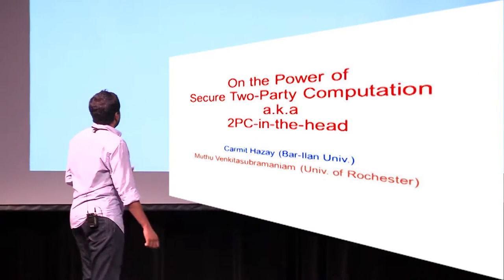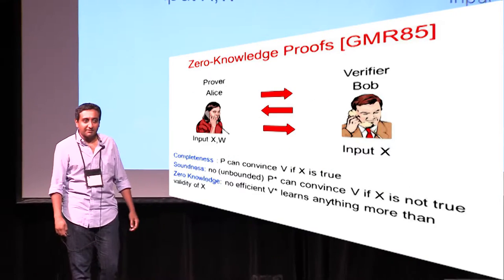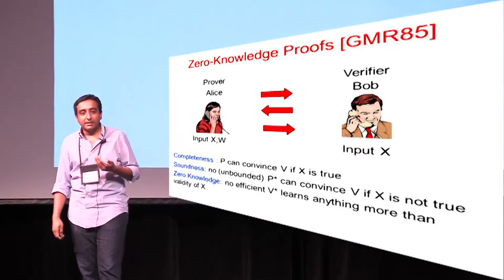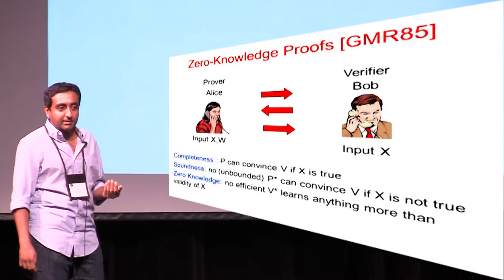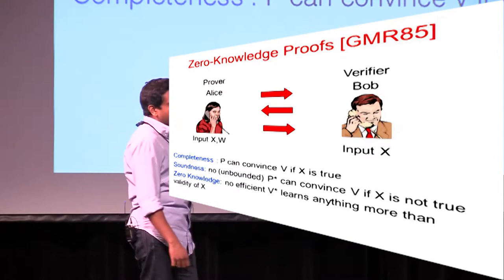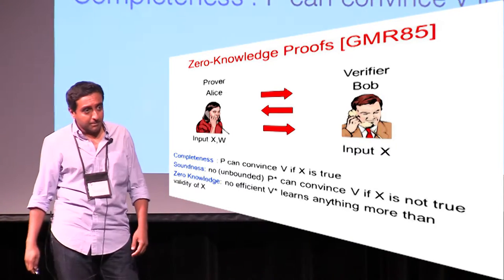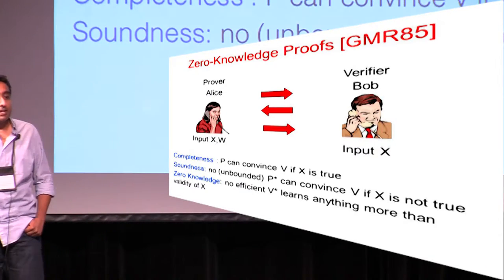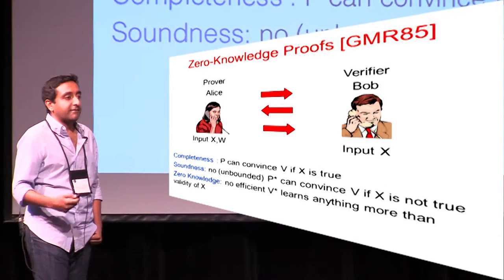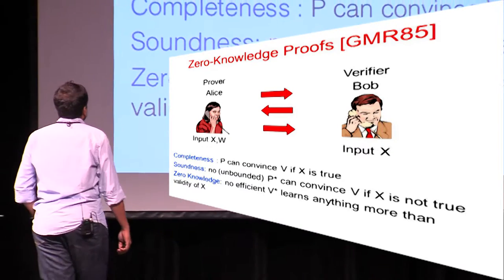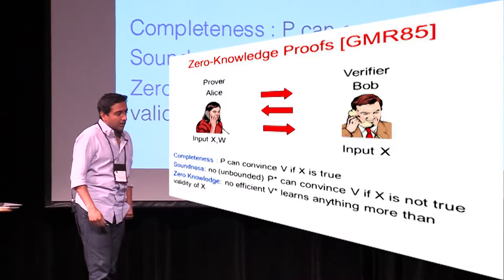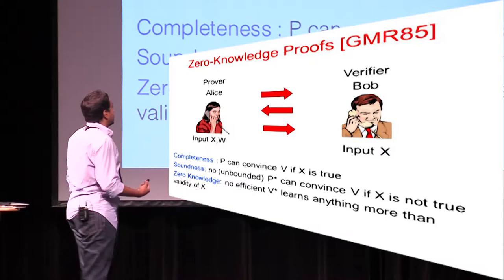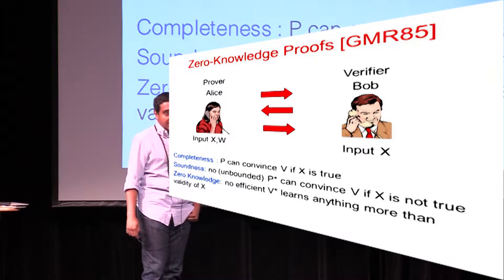This talk is going to be about zero-knowledge proofs. It's always nice to begin with the definition of zero-knowledge. It's an interactive protocol between a prover and a verifier that satisfies three properties. First, a prover can convince a verifier of a true statement. Two, soundness, which says that no cheating prover, even if computationally unbounded, can convince a verifier of a false statement. And zero-knowledge, which is central to this definition, says that no efficient verifier can learn anything more than the validity of the statement.